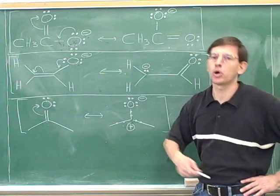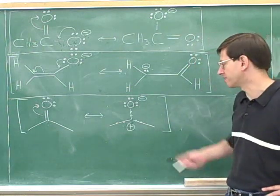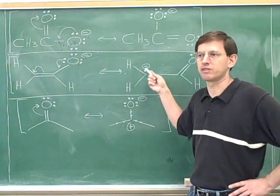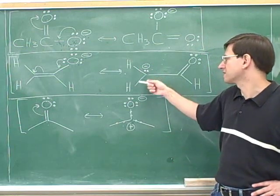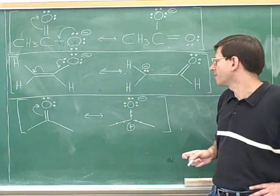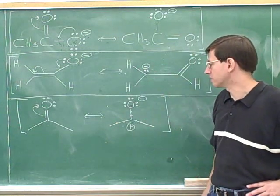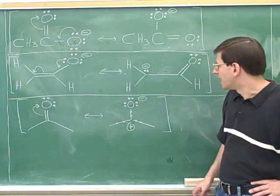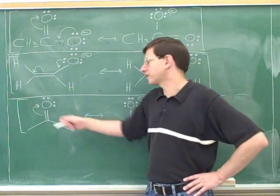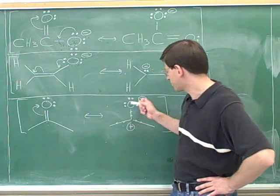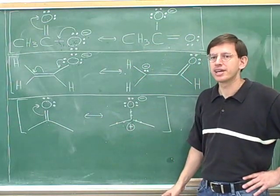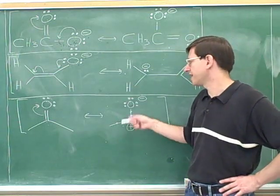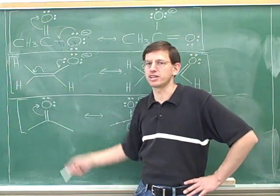You wouldn't want to draw a resonance structure that's totally insignificant, but as long as it has a fair amount of significance, it's still very important to draw it even if it's not the most significant one. The same is true for acetone. The resonance structure on the left is definitely more significant than the one on the right, because on the right we have charges and an incomplete octet. But if you're trying to predict how the molecule is going to react, it's actually much more useful to think about the resonance structure with the charges, because that's the one that shows where the reaction will occur.